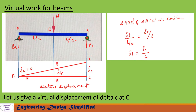Using the principle of similar triangles from triangles A-B-B' and A-C-C', we can write: delta_B / (L/2) = delta_C / L. From this we can write delta_B = delta_C / 2.